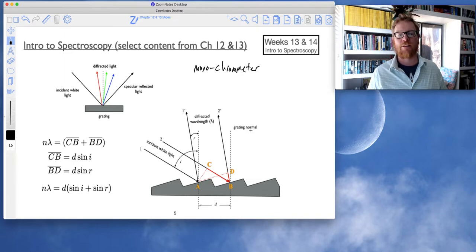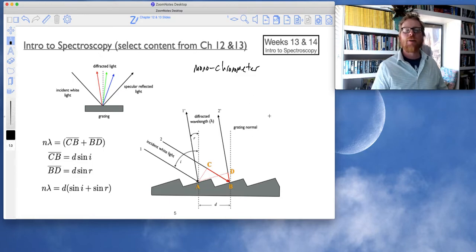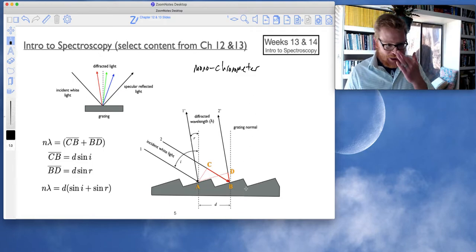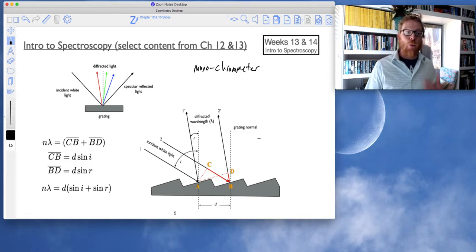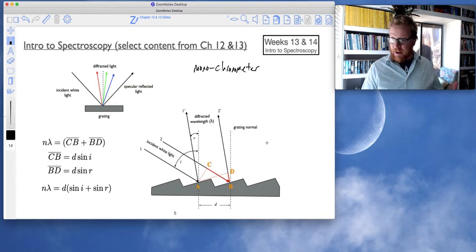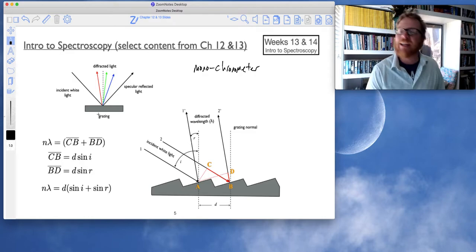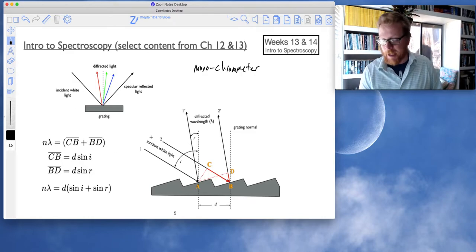I still have to say that slow to this day. Monochromometer. So, this is a way in which we can take advantage of specular reflection, as well as diffraction, to create light of any wavelength that we want, or to select a wavelength of light from an incident white light source.